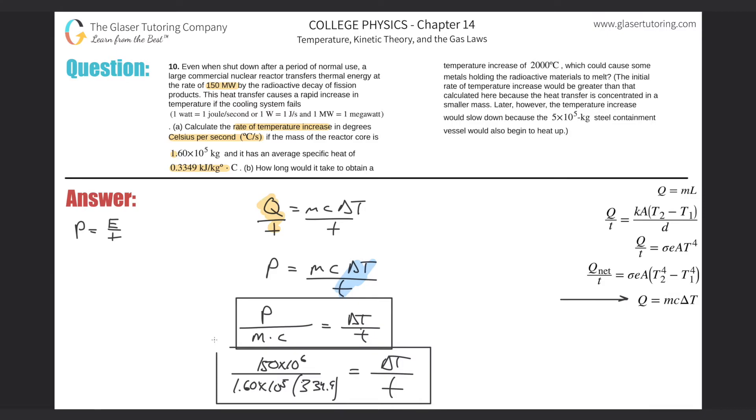All right, now, all we have to do is just plug it on into the calculator. So, 150 times 10 to the sixth divided by, then, parenthesis, 1.6 times 10 to the fifth, multiplied by 334.9. And here we get about, so, every second, and this is pretty fast. So every second, the temperature will be changing by a value of 2.8 or so, 2.80, with sig figs.